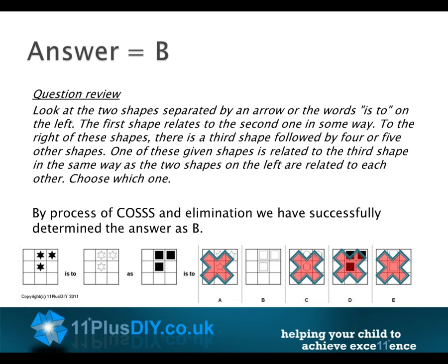Let's review the question. Look at the two shapes separated by an arrow or the words 'is to' on the left. The first shape relates to the second one in some way. To the right is a third shape, followed by four or five other shapes. One of these is related to the third shape in the same way as the two shapes on the left. By the process of COS and elimination, we have successfully determined the answer as B.